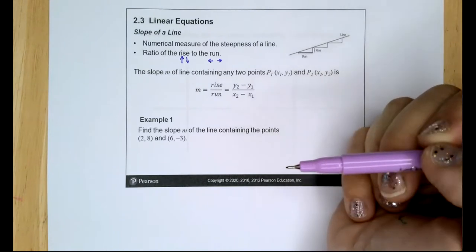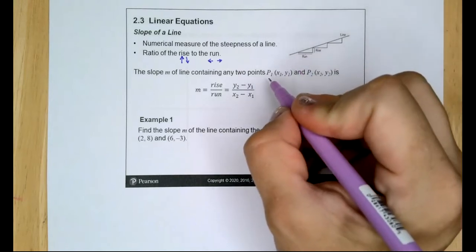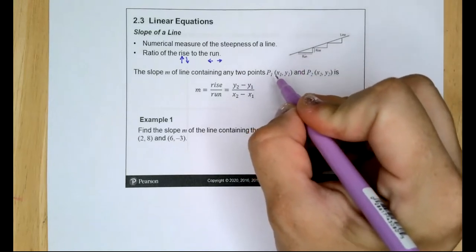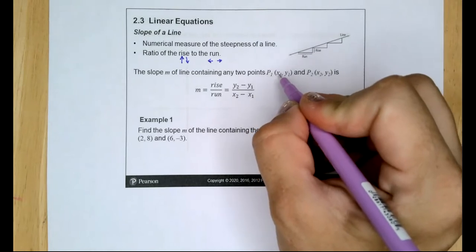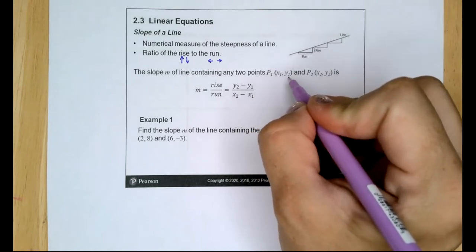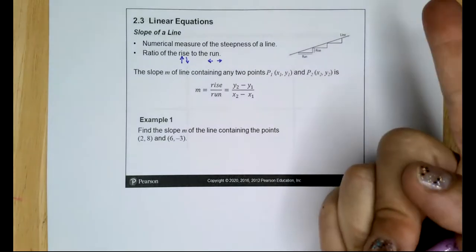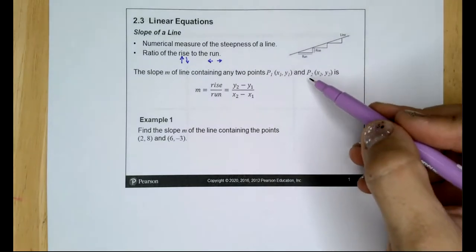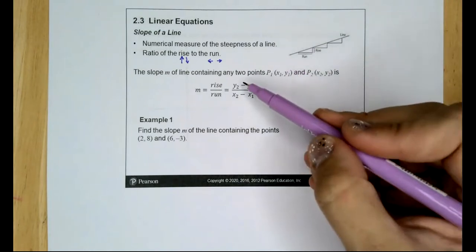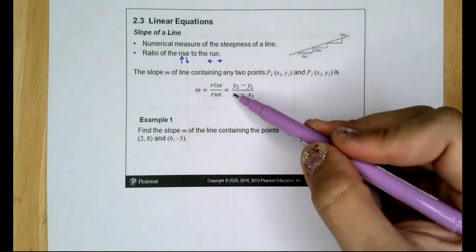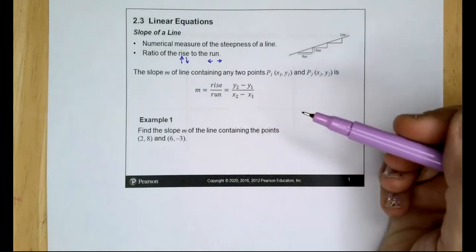The slope m of a line containing any two points — P1 (x sub 1, y sub 1) and P2 (x sub 2, y sub 2) — is rise over run, or y2 minus y1 over x2 minus x1.